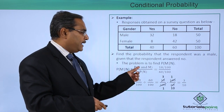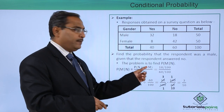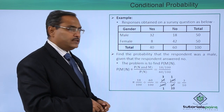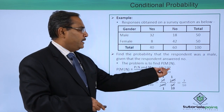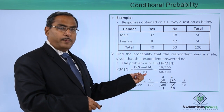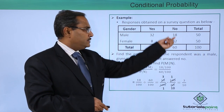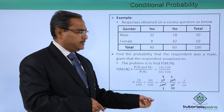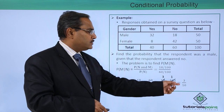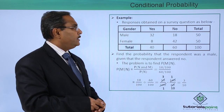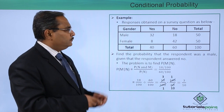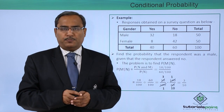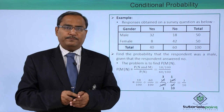The probability of N and M — that is, male and no at the same time — is 18. So we write 18/100, and the probability of no is 60/100. Simplifying gives us 3/10. In this way, we have explained with examples how conditional probability can be calculated for a given problem. Thanks for watching this video.